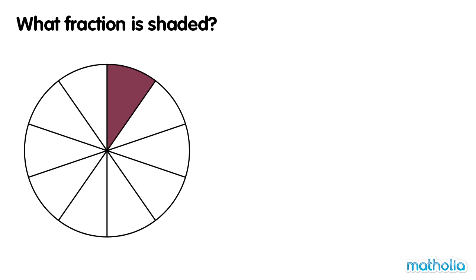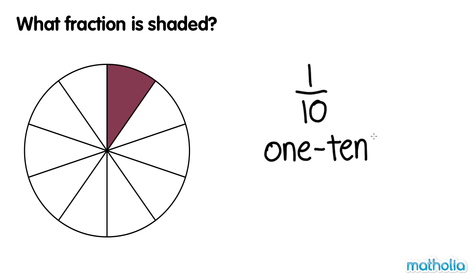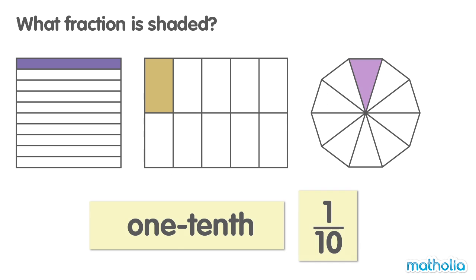This circle is divided into 10 equal parts. One part is shaded. One tenth of the circle is shaded. One tenth of these shapes are shaded.